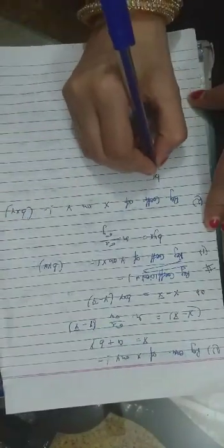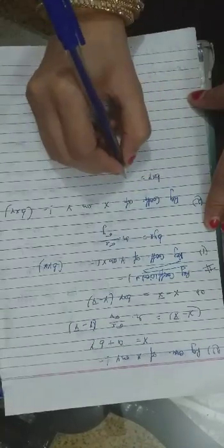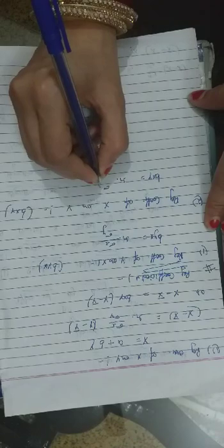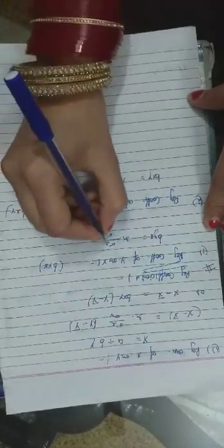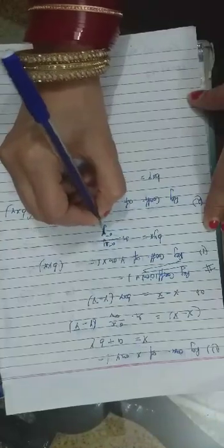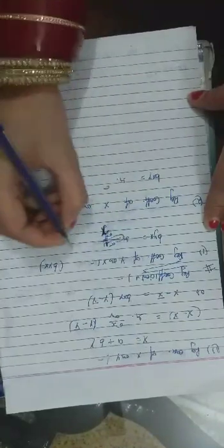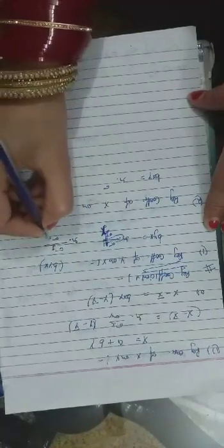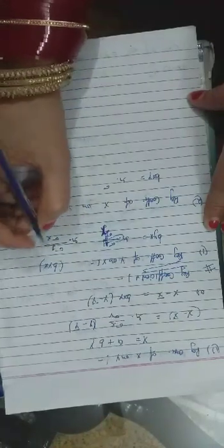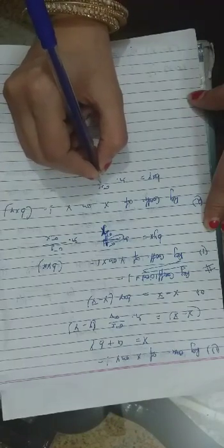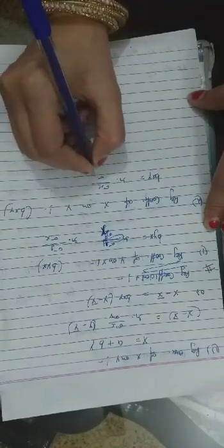The formula for byx is: byx = r·(σy/σx). The formula for bxy is: bxy = r·(σx/σy). Note that the correlation coefficient r is the geometric mean of the two regression coefficients byx and bxy.